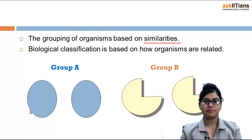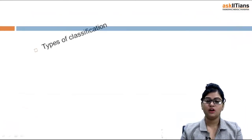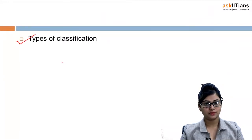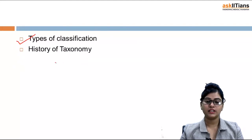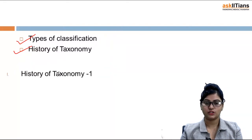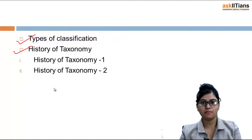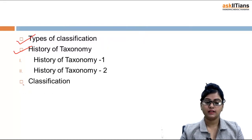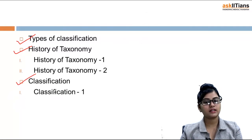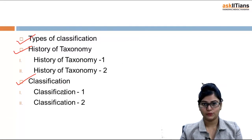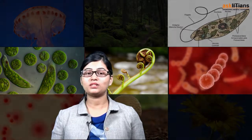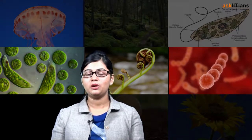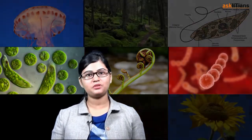The plants and organisms possessing similarities in characteristics will be placed under one group. In this chapter, we will first be studying types of classification, then the history of taxonomy — subdivided into part one and part two — and then the topic of classification, divided into classification one and classification two. So this is all about why we need to classify organisms and what is the need of biological classification. Moving on to our next lecture, we will be discussing the types of classifications.